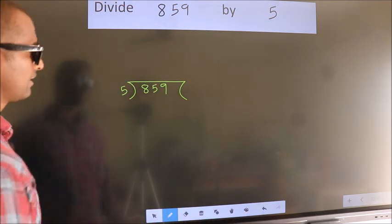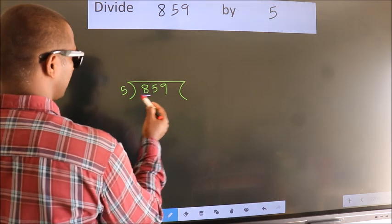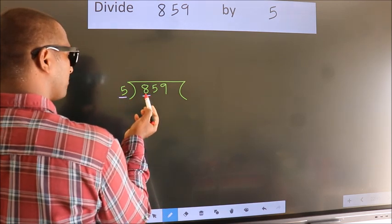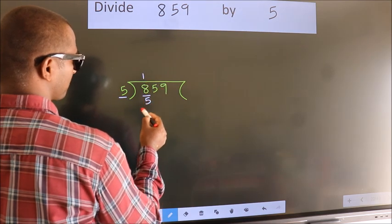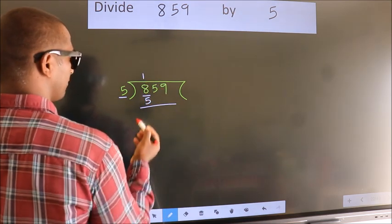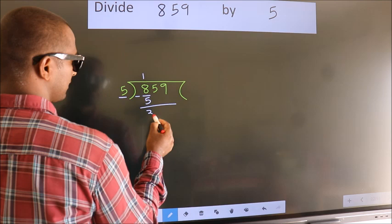Next. Here we have 8, here 5. A number close to 8 in 5 table is 5 times 1 is 5. Now we should subtract. We get 3.